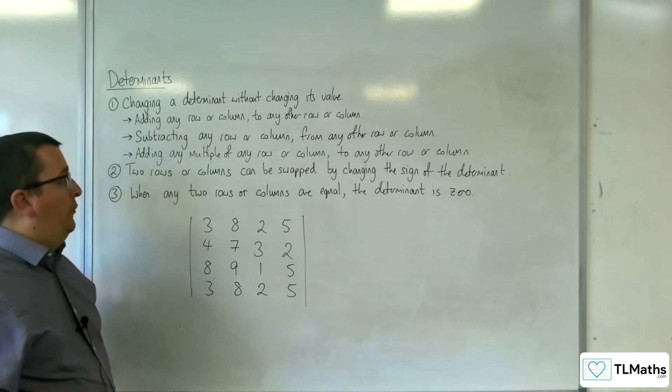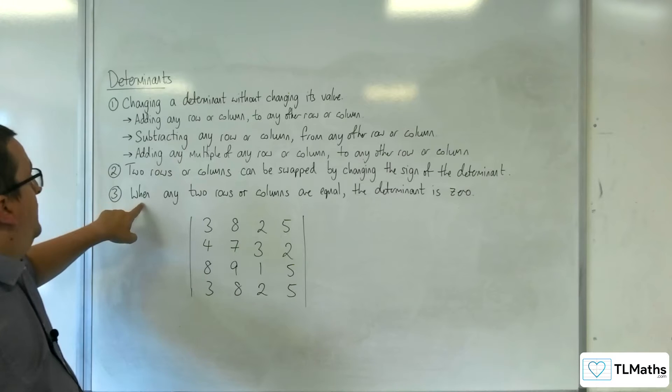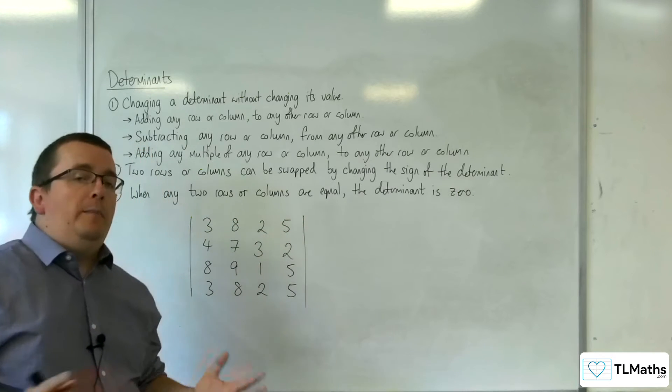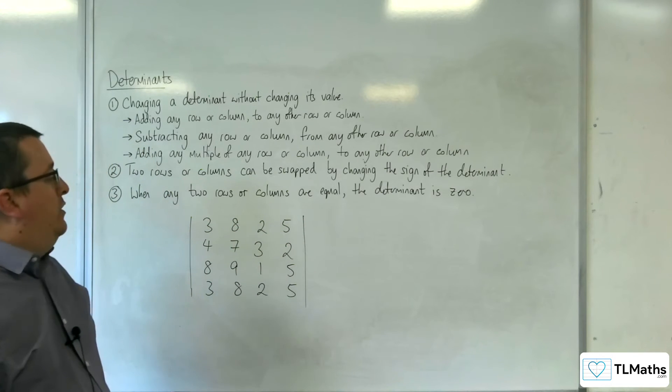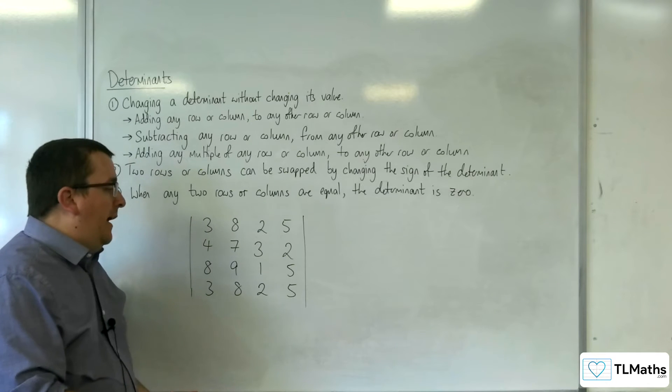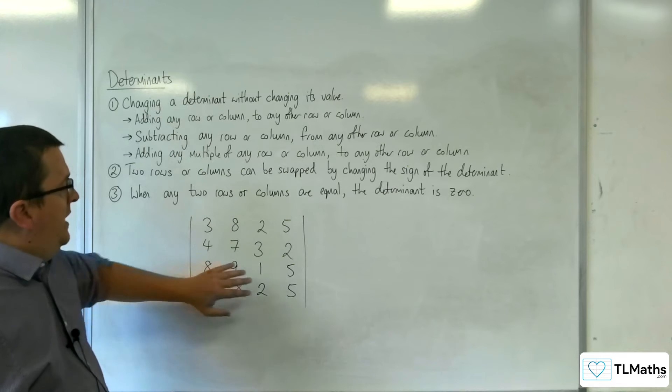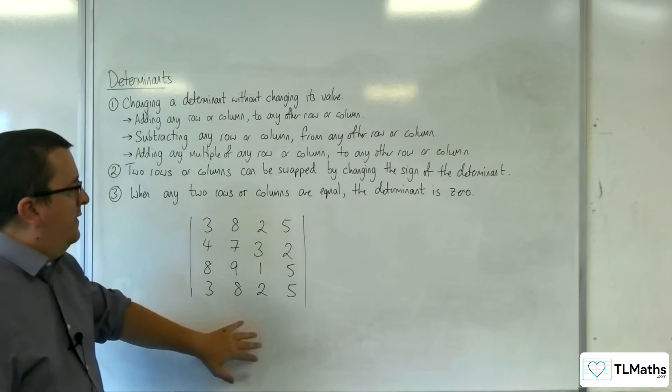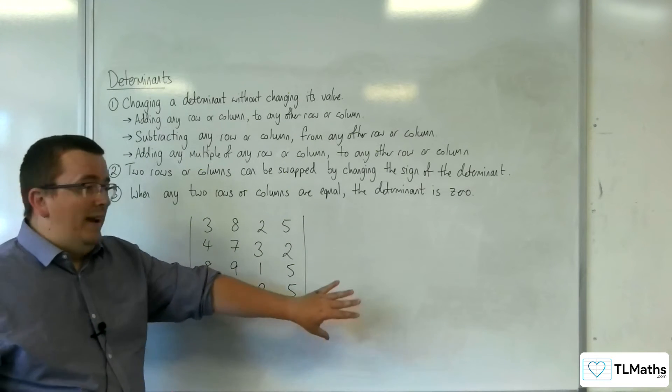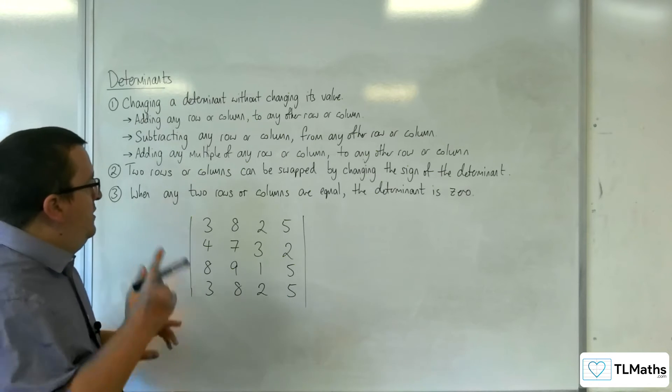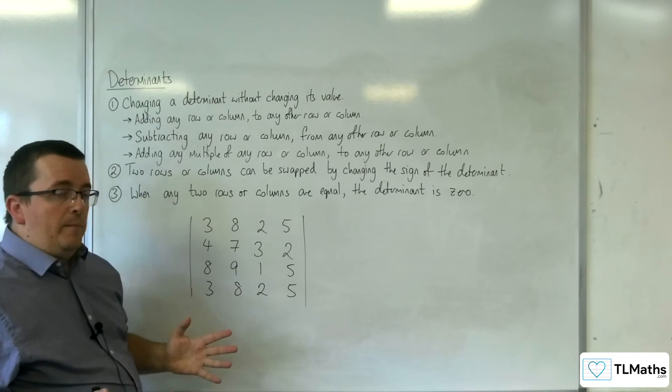Now, what is very useful to keep under your belt is the fact that when any two rows or columns are equal, the determinant has to be 0. Now, you might be wondering as to why that is the case, which I'll show. I mean, if you wanted to find the determinant of this, then if you're doing this by hand, it'd be quite an epic one, but notice that the top row and the bottom row are precisely the same.